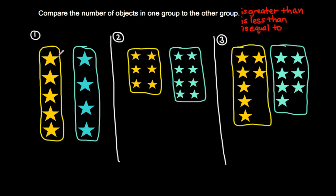Let's get to some examples. We can first compare by using a strategy called counting. In this first problem, we're comparing the number of objects in the yellow group to the number in the blue group. Let's count: we have one, two, three, four, five stars in the yellow group. And in the blue group: one, two, three, four — that's four. Since five is more than four, the yellow stars are greater than the blue stars.